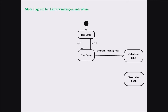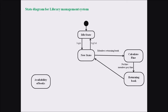After the fine calculation, the member can move to the next state known as return book. The return book state transitions from the calculate fine state with a message of no fine or the member paying the fine. The member can move to return book either by paying the fine or without any fine. The next transition is from returning book back to the new state.